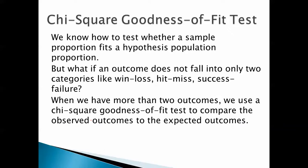Let's look at a chi-square goodness-of-fit test. We know how to test whether a sample proportion fits a hypothesis population proportion, but what if an outcome does not fall into only two categories like win-loss, hit-miss, success-failure? When we have more than two outcomes, we use a chi-square goodness-of-fit test to compare the observed outcomes to the expected outcomes.